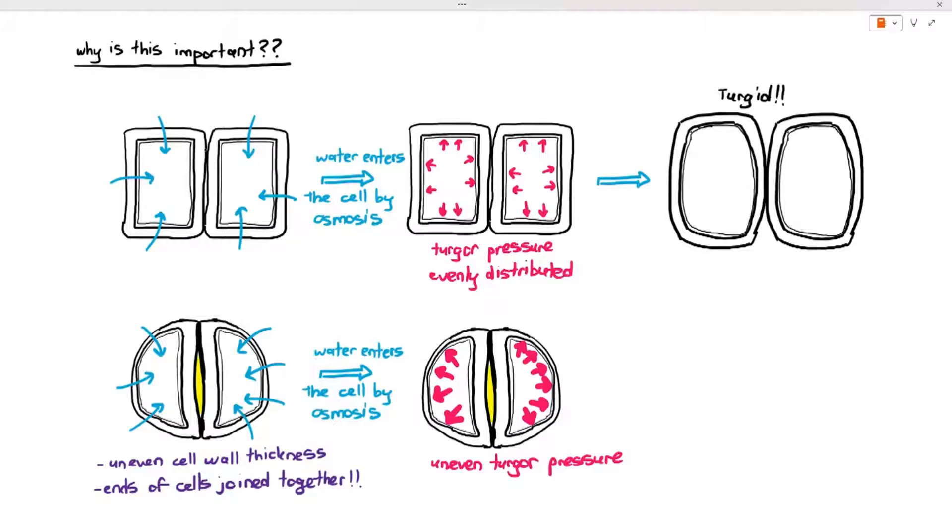The thicker side will be able to resist expansion because the thick cell wall is stronger, but the thinner cell walls at the sides over there are more susceptible to being pushed by the turgor pressure.